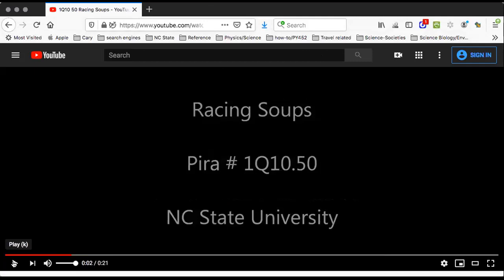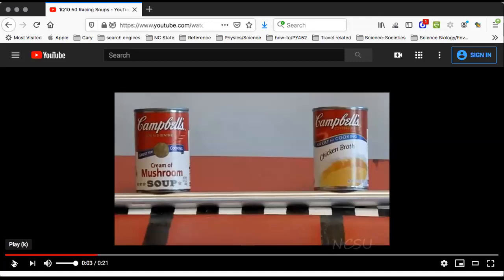Here are our two contenders. On the left we have cream of mushroom, and on the right we have chicken broth. Now this is a good test, of course, if you ever at home knew that you had one or the other but the labels had fallen off. So how are we going to tell which one is going to win? Clearly, the one that should win is the one that's going to have the smaller moment of inertia.